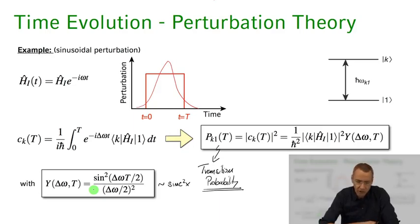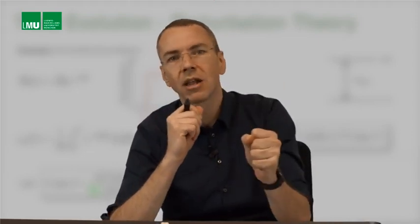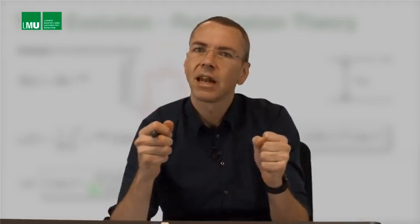So in general, you see this Y function will be depending on how exactly our perturbation is turned on over time and turned off. But in this specific case of just, you know, going bang on with the light field, bang off with the light field, this rectangular pulse, we get this characteristic sinc function.